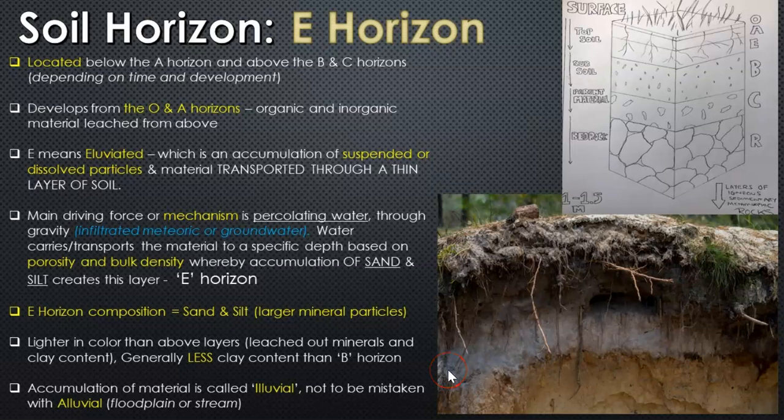The E horizon does have a mineral component, pore spaces, water, air, maybe some microorganisms and decomposition at that depth, and possibly some roots. But you're going to have a concentration of sand and silt, because the clay — one of the three main mineral constituents of soil — gets washed down to the B horizon through the eluviation process. So the clay accumulates in the B horizon.